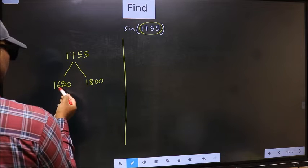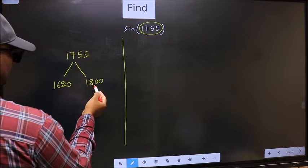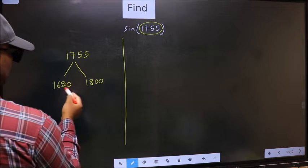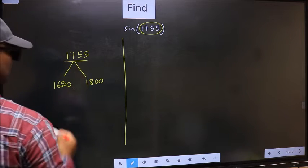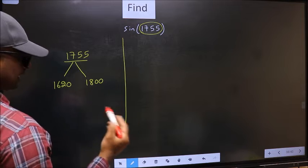This is 180 into 9 and this is 180 into 10. Between these two numbers, 17 double 5 lies. Next.